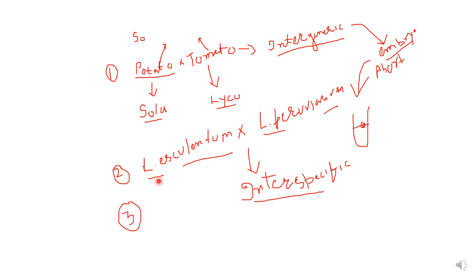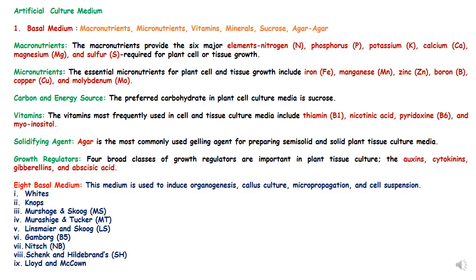The second example is hybridization between Lycopersicon esculentum (cultivated tomato) and Lycopersicon peruvianum (a wild species of tomato), done to transfer disease resistance or stress tolerant properties of the wild species. This is interspecific hybridization because the genus is the same — Lycopersicon — but the species differ. The embryo formed is unable to germinate under normal conditions, so it can be rescued by culturing under artificial conditions.